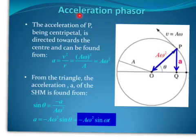Now we look at acceleration phasor. The acceleration of P, being centripetal, is directed towards the center of the circle. So that arrow represents the centripetal acceleration of P. And we can use this formula for centripetal acceleration to simplify it down to that.